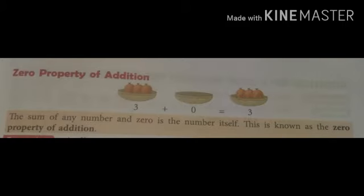तो यहाँ पे हमने सीखा: the order property of addition, the grouping property of addition, and zero property of addition। इस तरह से हमने addition की three properties सीखी हैं। यह property बहुत easy है, आपको यह वीडियो बार-बार देखना है और समझ लेना है। Self practice 3C में second question HW में complete करना है और first question test में complete करना है। Next point मैं next video में सिखाऊंगी। Thank you।